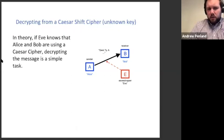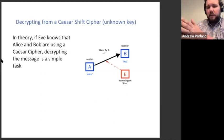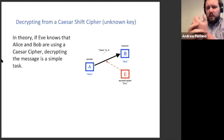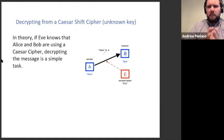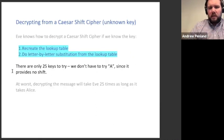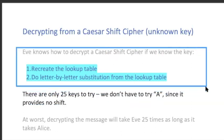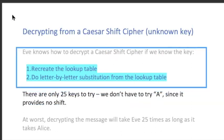In theory, if Eve knows that Alice and Bob are using a Caesar cipher, where Alice is just going to shift the alphabet by a certain amount, then it's a simple conceptual thing to decrypt the message. It involves some work — Eve is going to have to write some things down — but the steps behind how you do it are relatively straightforward to understand. We start with the idea that we know how to decrypt a Caesar cipher if we know the key. If you know the key, you can go back to the message and recreate the lookup table that was used to encrypt, and then go the opposite way — from bottom to top instead of top to bottom.